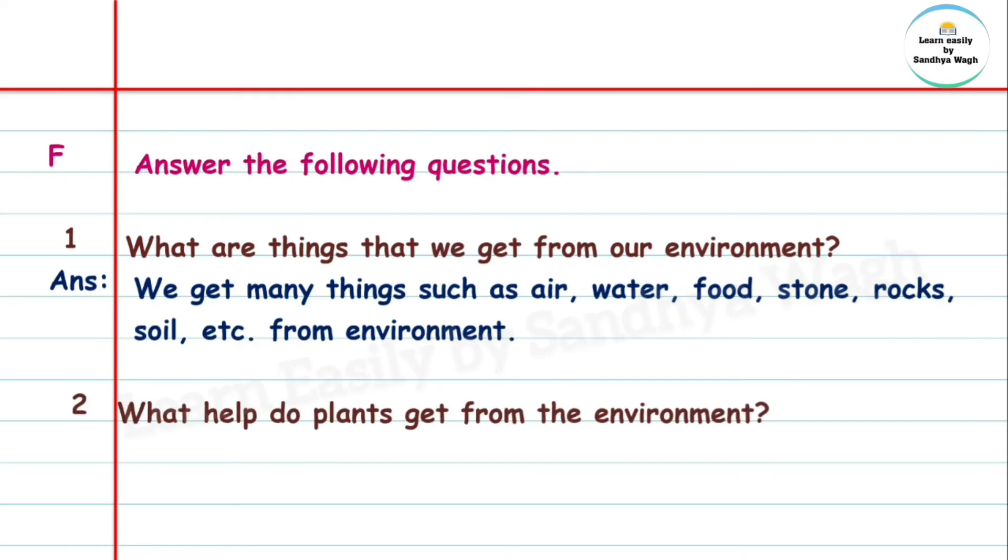Question 2: What help do plants get from the environment? Answer: Plants get air, water and food from our environment.